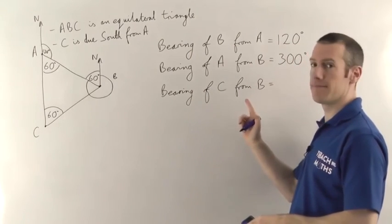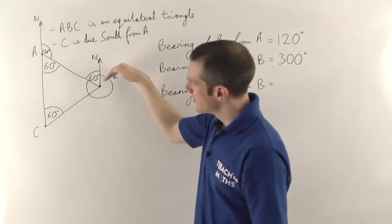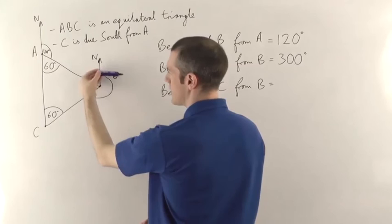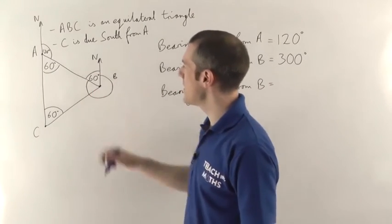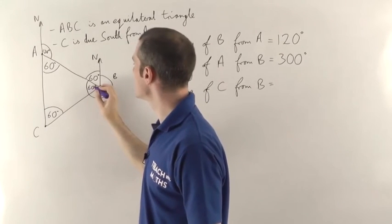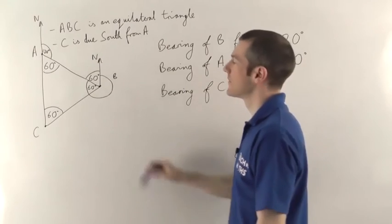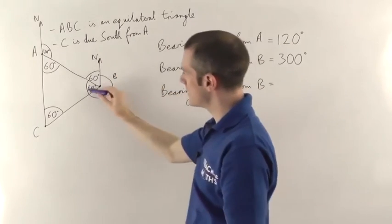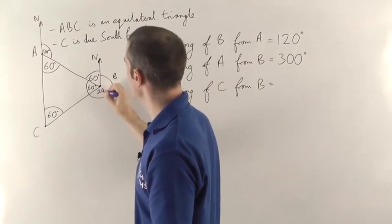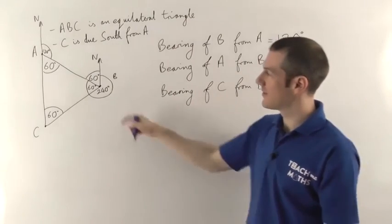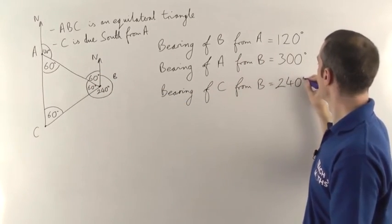Finally, the bearing of C from B. Again we're going from B, north line is there. We need the angle clockwise from north towards C this time — not towards A, but towards C. The interior angle of the equilateral triangle at B is 60 degrees — just that part. We already know it's 300 degrees around to the direction of A, so take away another 60: 300 minus 60 gives 240 degrees. The bearing of C from B is 240 degrees.